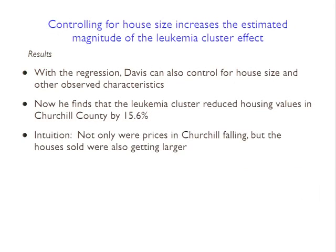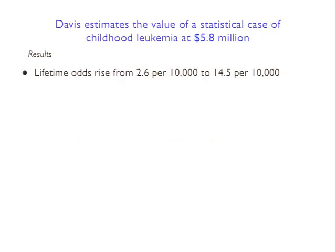The last thing he does is use these numbers to back out what the value of a statistical case of leukemia is. The value he comes up with is basically $5.8 million, which is actually pretty close to the value of a statistical life in lots of other contexts - so it's consistent in that sense.